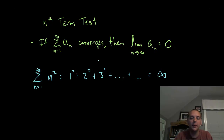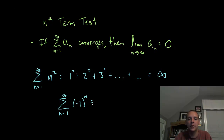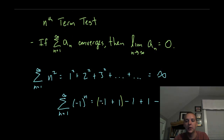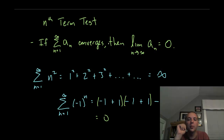Some people might say: what if it alternated? This is a classic problem where the terms alternate between plus or minus one. Let's say you had the sum of negative one to the n — then you'd have negative one plus one minus one plus one minus one plus one forever. Somebody might say that if you group them, you get zero, and then negative one and one makes zero, and so this converges, right? But the terms don't go to zero — they just oscillate back and forth.